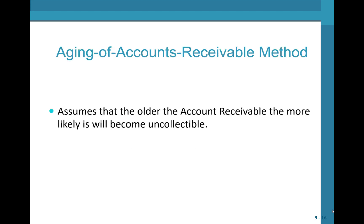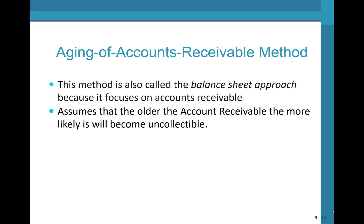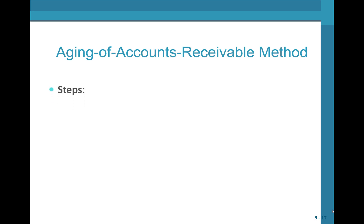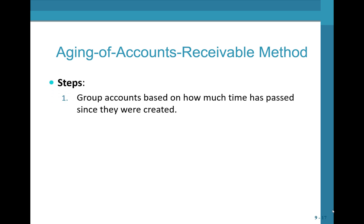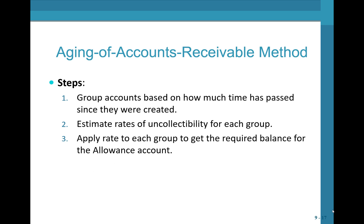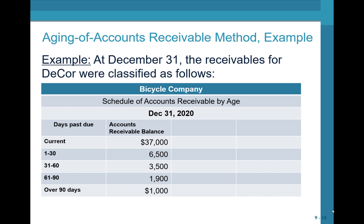In the aging of AR method, we assume that the older the AR, the less likely we are to collect it. This method is also called the balance sheet approach because it focuses on AR. Step 1: group accounts based on how much time has passed since they were created. Step 2: estimate the rates of uncollectibility for each group. Step 3: apply that rate to each group to get the required balance for the allowance account.